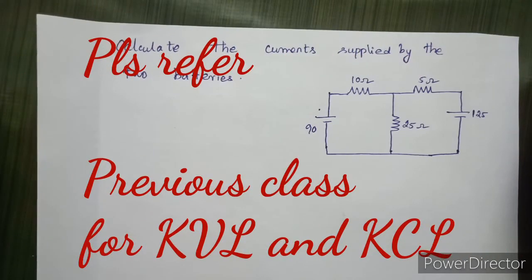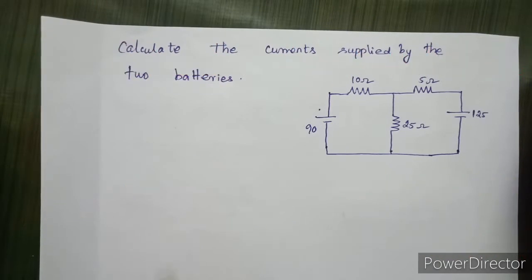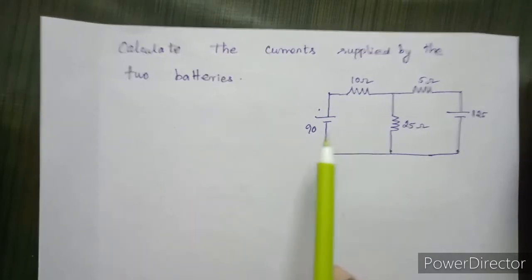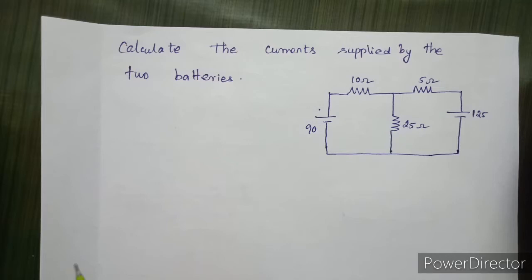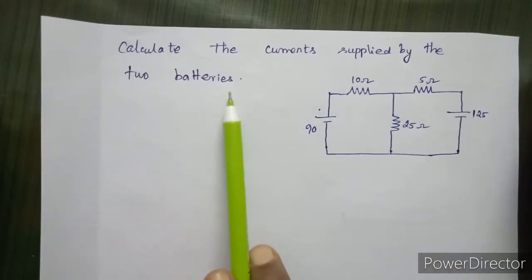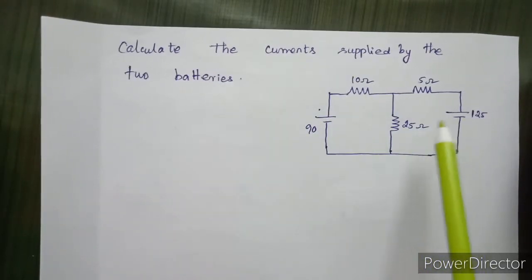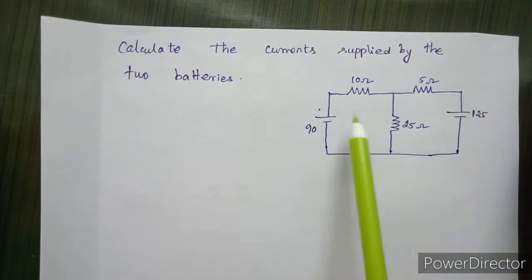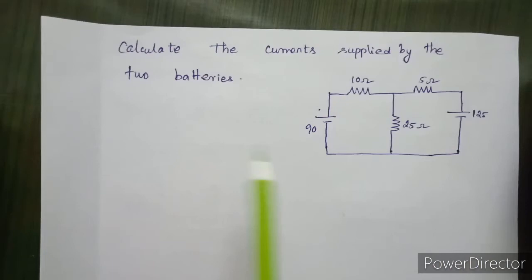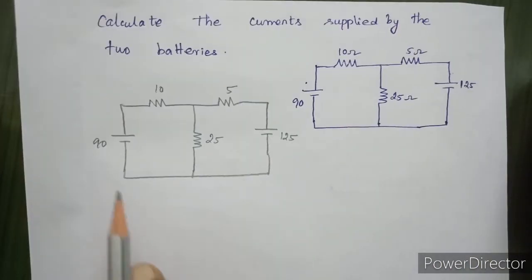Hi students! We are going to talk about problems in KVL and KCL. We are going to discuss this. If you look at the problem, you will see the link in the description box. The problem is: calculate the current supplied by the two batteries. There is a circuit with two sources. We are going to draw the circuit.